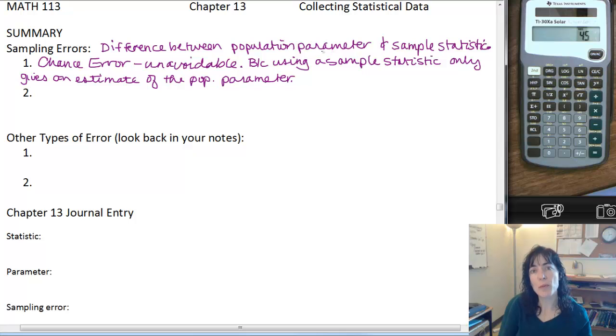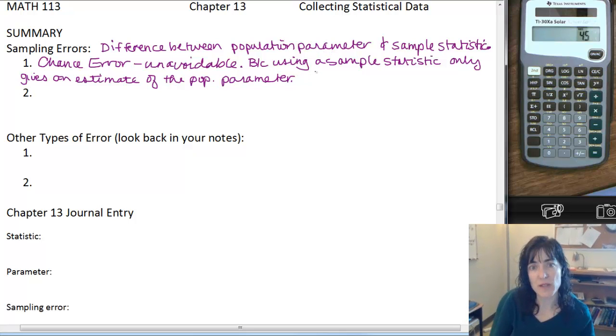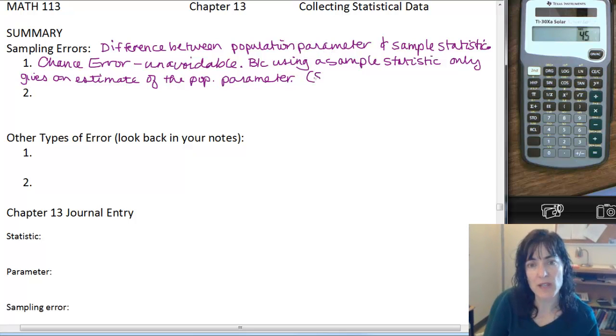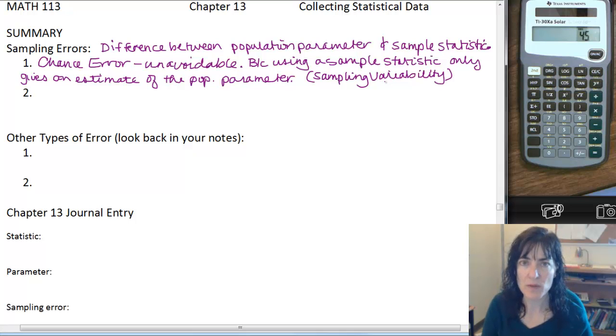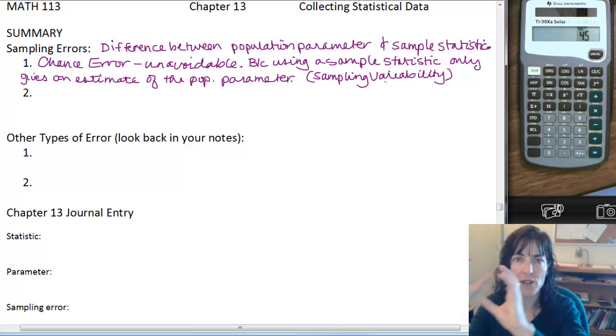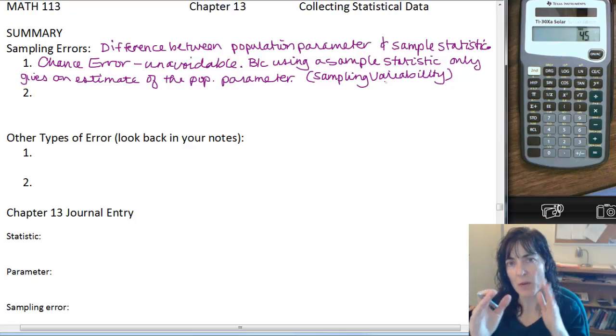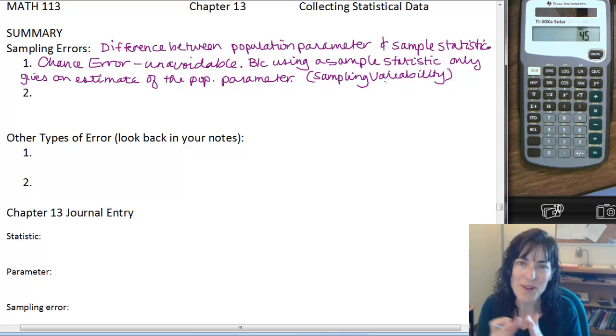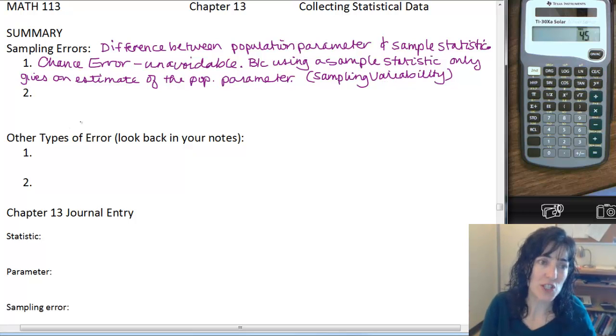And then remember sampling variability goes in this category as well. It is a type of chance error that comes from, if you took several samples each of them would have a different statistic for the same population parameter. And they should be close, but they won't be exactly the same.